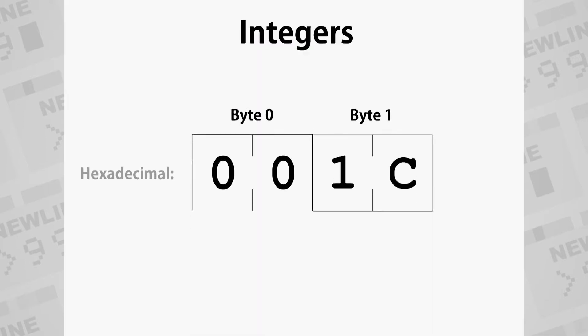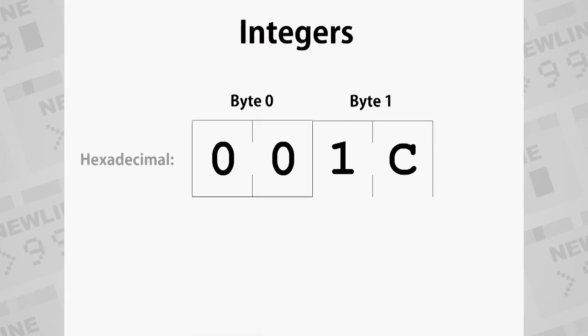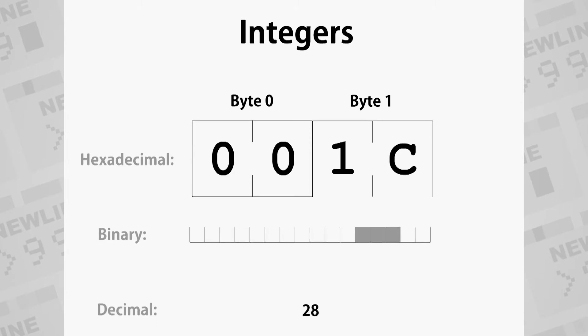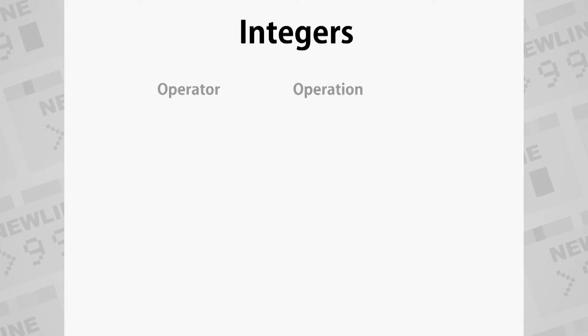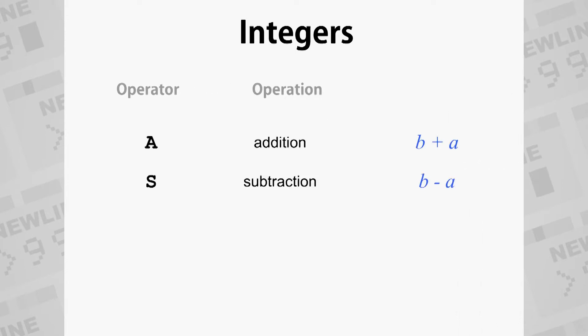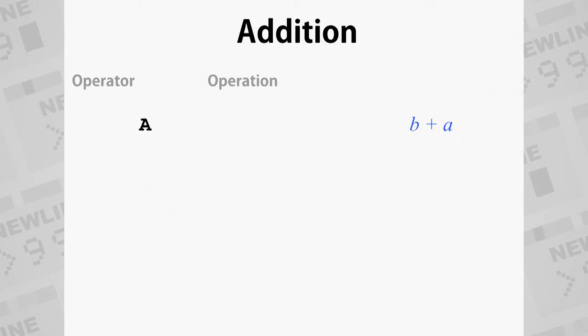Integers are stored as 2-byte word values — 16 bits — the same size as a workspace register. They are the easiest to work with. Assembly has access to integer operations for addition, subtraction, multiplication, and division. They all take two operands.